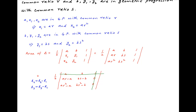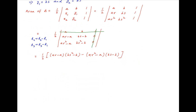We open up this determinant pivoting around the element in the first row and the third column. So, the value of the area of the triangle is equal to half of, in brackets, ar minus a times bs squared minus b, minus ar squared minus a times bs minus b. Taking a, b common in the first term, the value of the area is equal to half of ab times r minus 1 times s squared minus 1. Again, taking a, b common in the second term, we get r squared minus 1 times s minus 1.